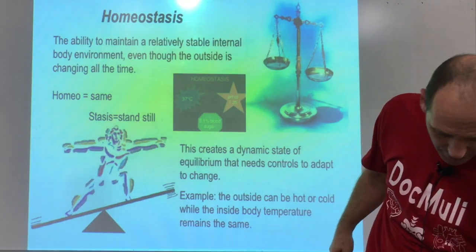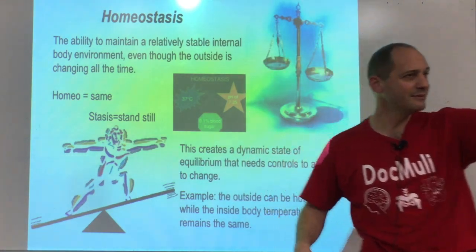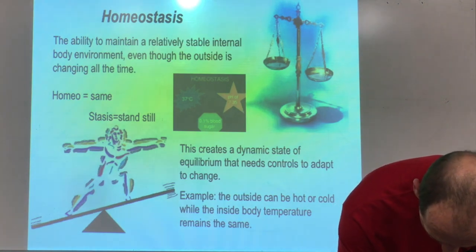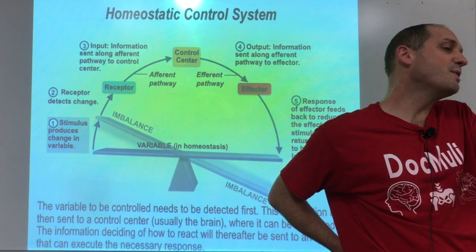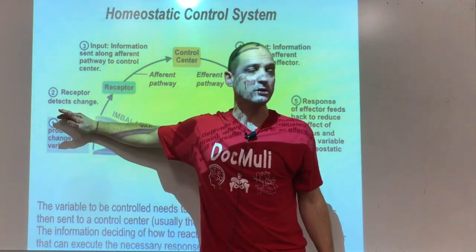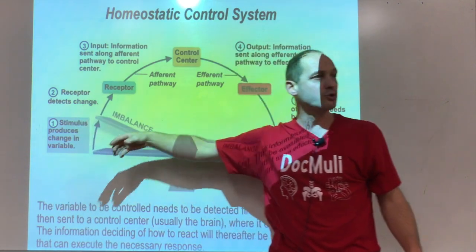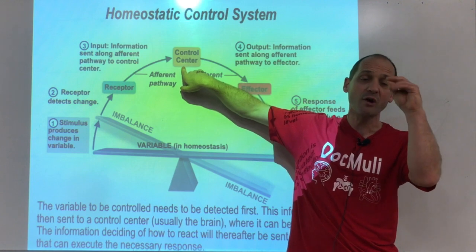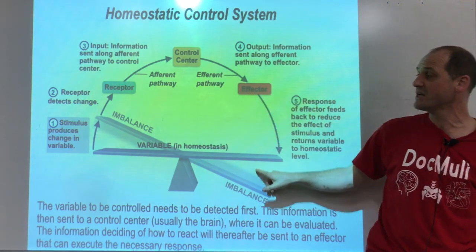What are the components of the homeostatic control system? Receptors, control center, and effector. The control center is essentially the brain — or the spinal cord for rudimentary stuff. A stimulus occurs; the receptor picks it up and sends an impulse to the control center. The brain decides what to do and sends a pathway out to an effector. The effector does whatever is needed to bring things back into balance.